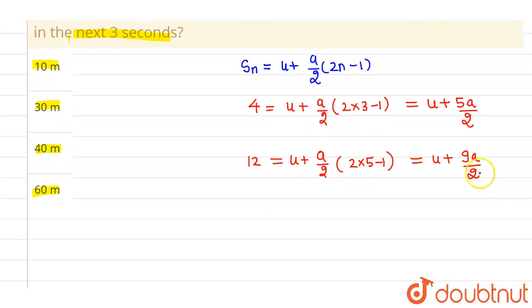Now if we solve this, let's say this is equation 1 and this is equation 2. So if you subtract equation 1 from equation 2, then on the right hand side you will be getting 12 minus 4 which is 8.